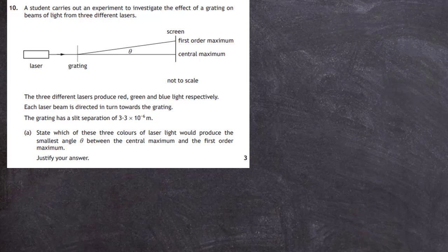The three different lasers produce red, green, and blue light respectively, and each laser beam is directed in turn towards the grating. The grating has a slit separation of 3.3 × 10⁻⁶ metres. Part A asks: state which of these three colours of laser light would produce the smallest angle theta between the central maximum and the first order maximum, with a justified answer.